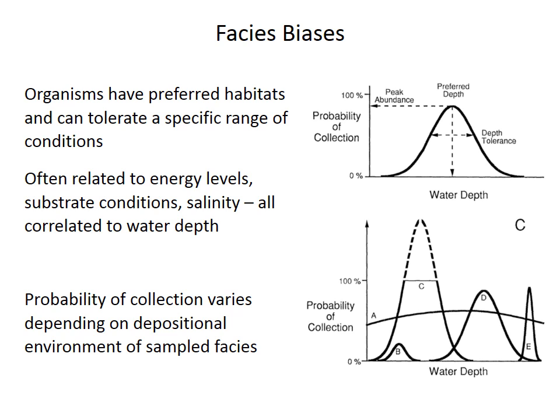Some species, like A in the bottom panel, have very broad ranges, so you're moderately likely to find them at many different water depths. But others, like species C, have very narrow ranges, so you're extremely likely to find them at their preferred depth but not anywhere else. Therefore, the probability of collection depends on the depositional environment, or the facies, at each position when sampling a succession of rocks.